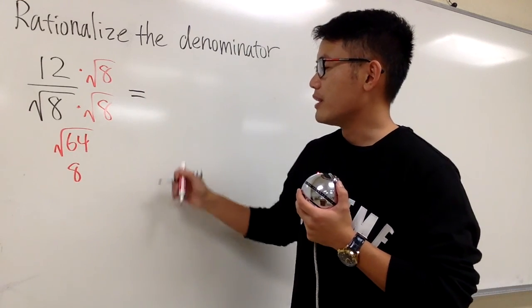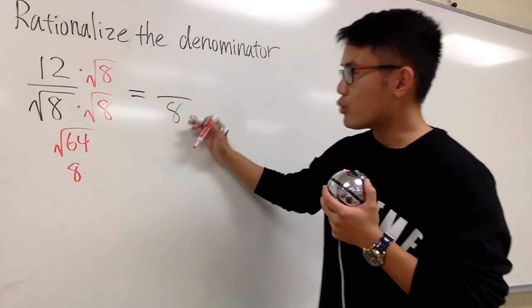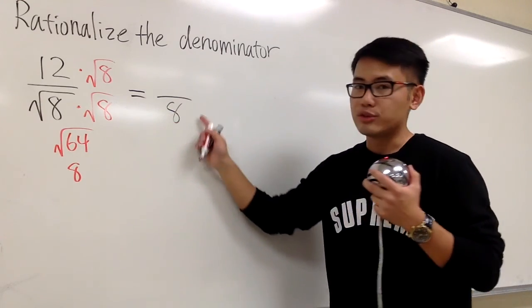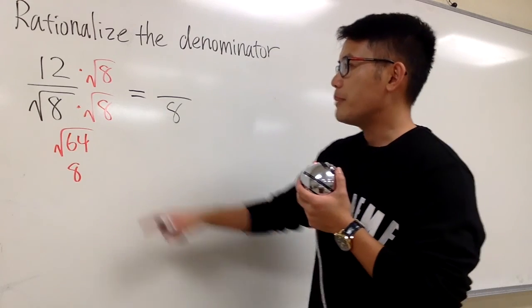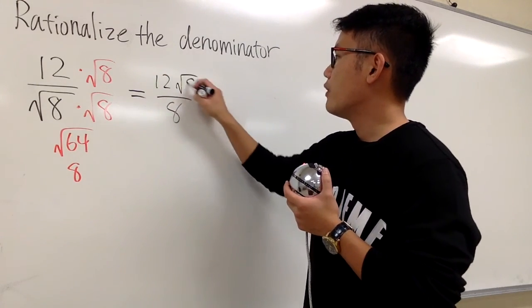So, what you can get is an 8 in the denominator, no more radicals. So, for sure, this is the rational number in the denominator, right? On the top, you still have this. 12 square root of 8.